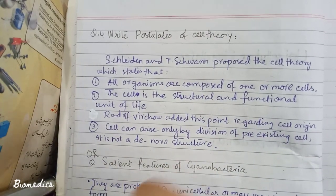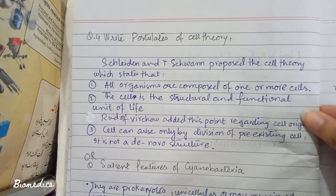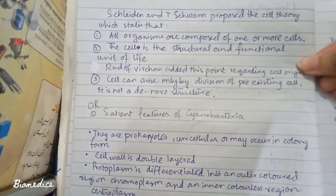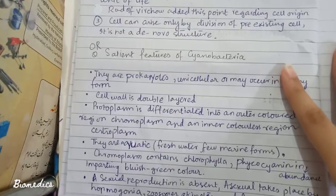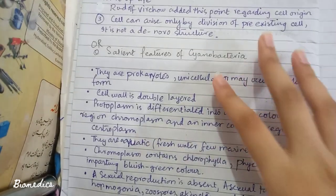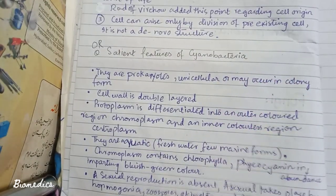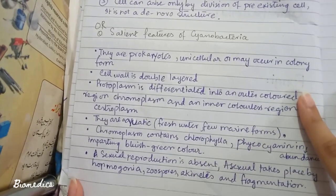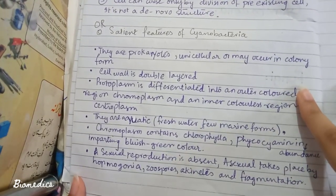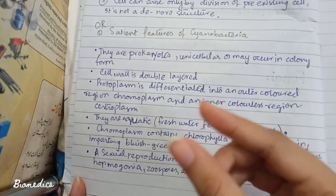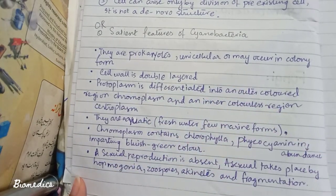Cells will always divide into new cells. Next, we have asked about the salient features of Cyanobacterium, which has 8 points. Cyanobacterium are prokaryotes that exist as unicellular and colonial forms.